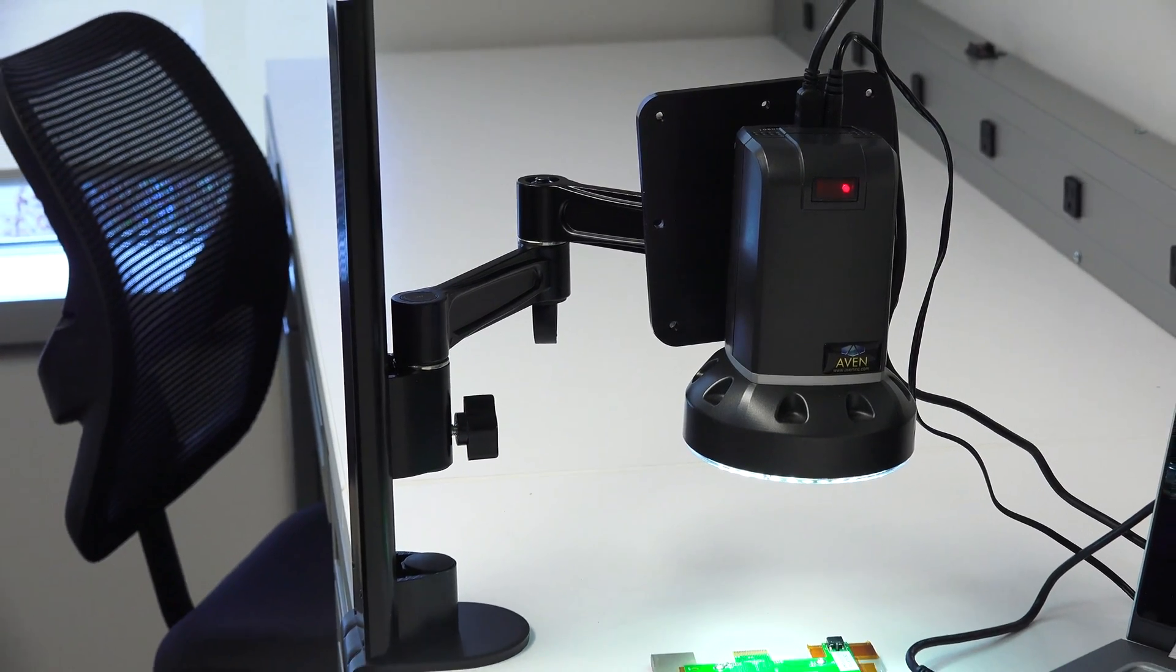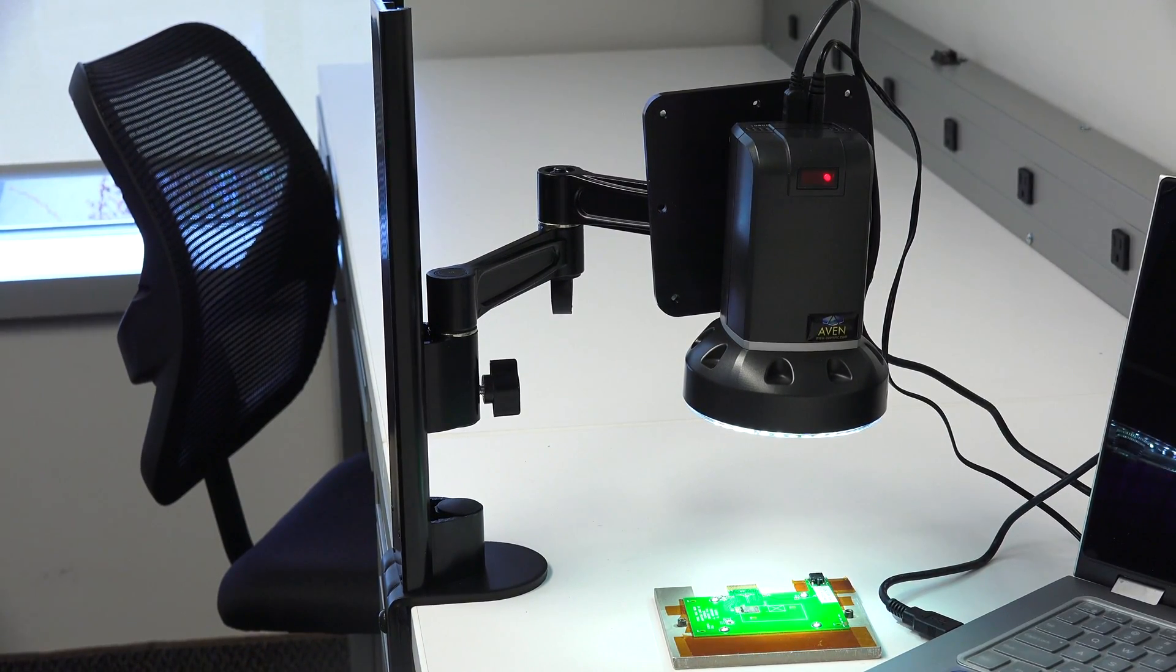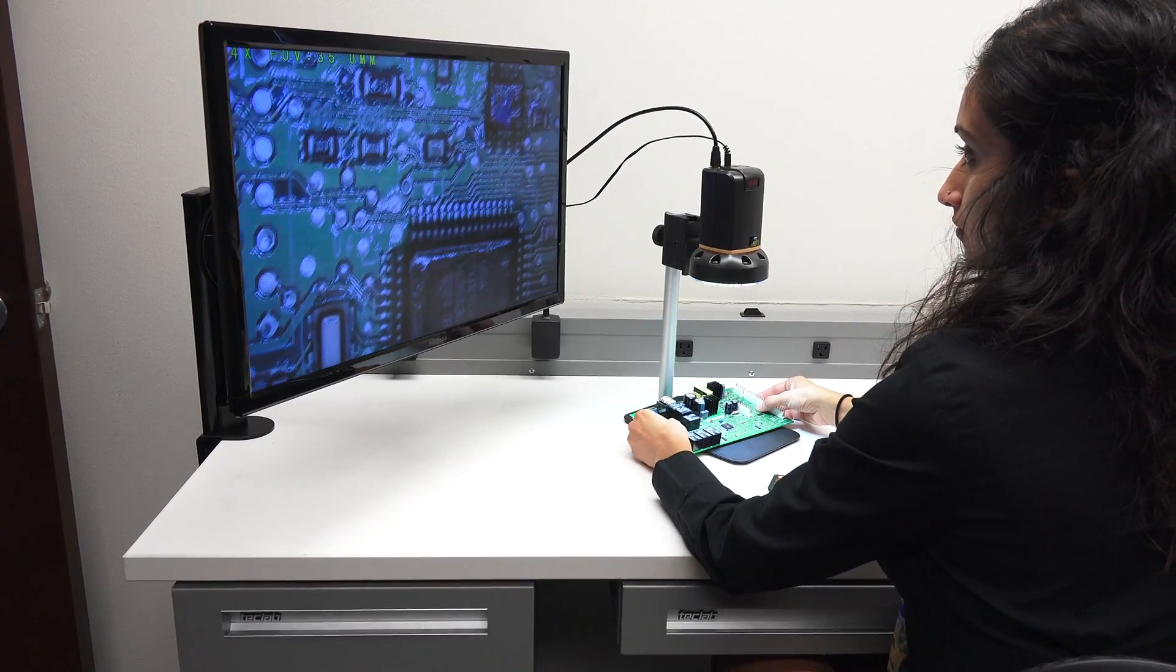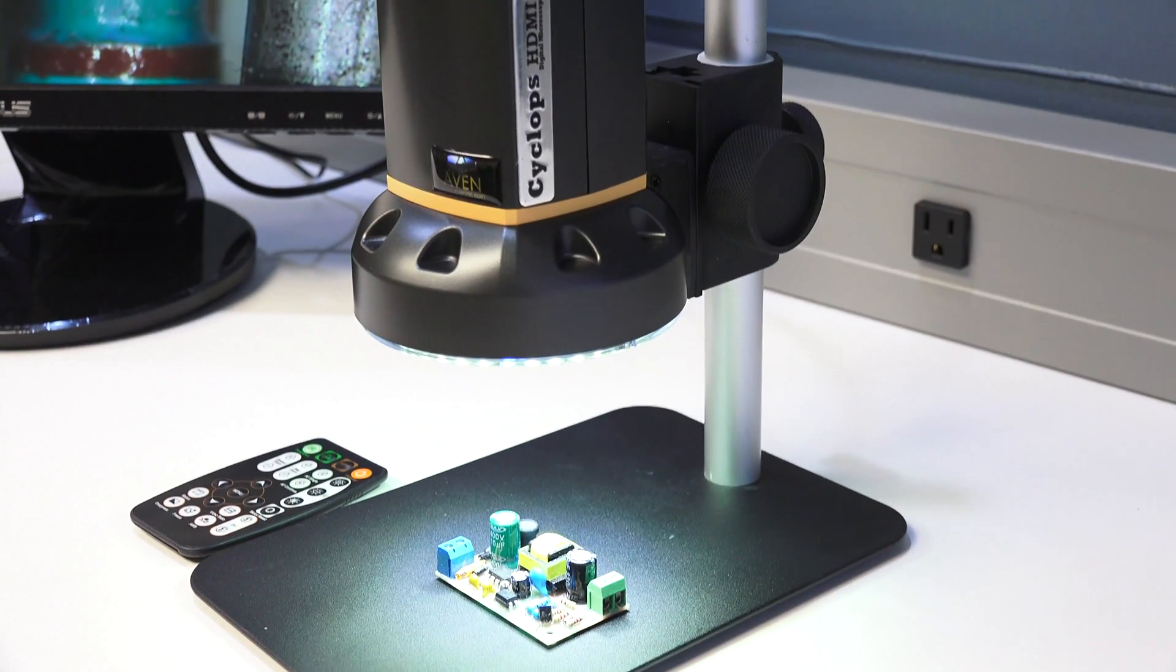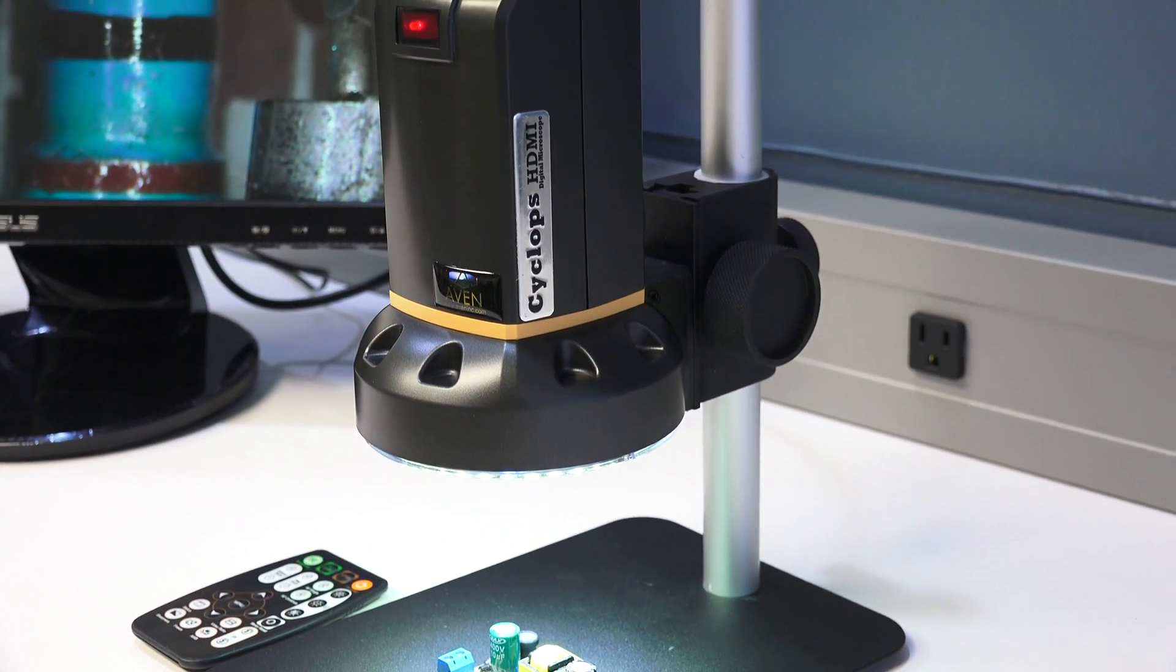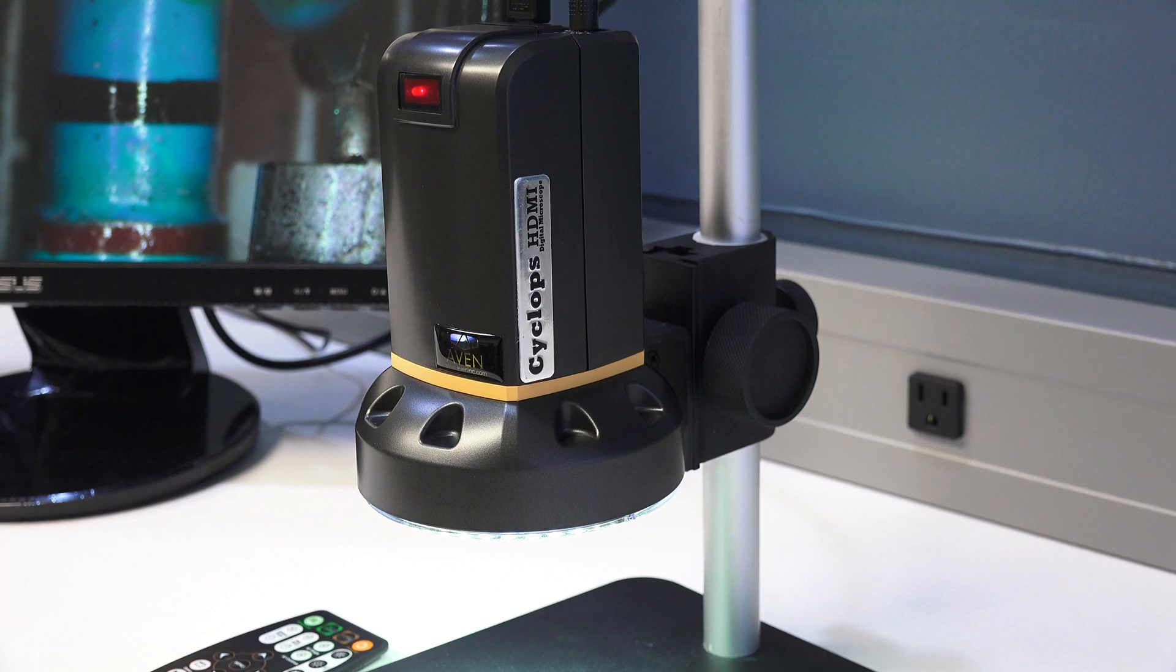Adjustable articulating arm stands available in both 12 inch and 17 inch heights. For high quality imaging and powerful magnification without a PC, the Avon Cyclops HDMI is the ideal choice for your inspection or assembly area.